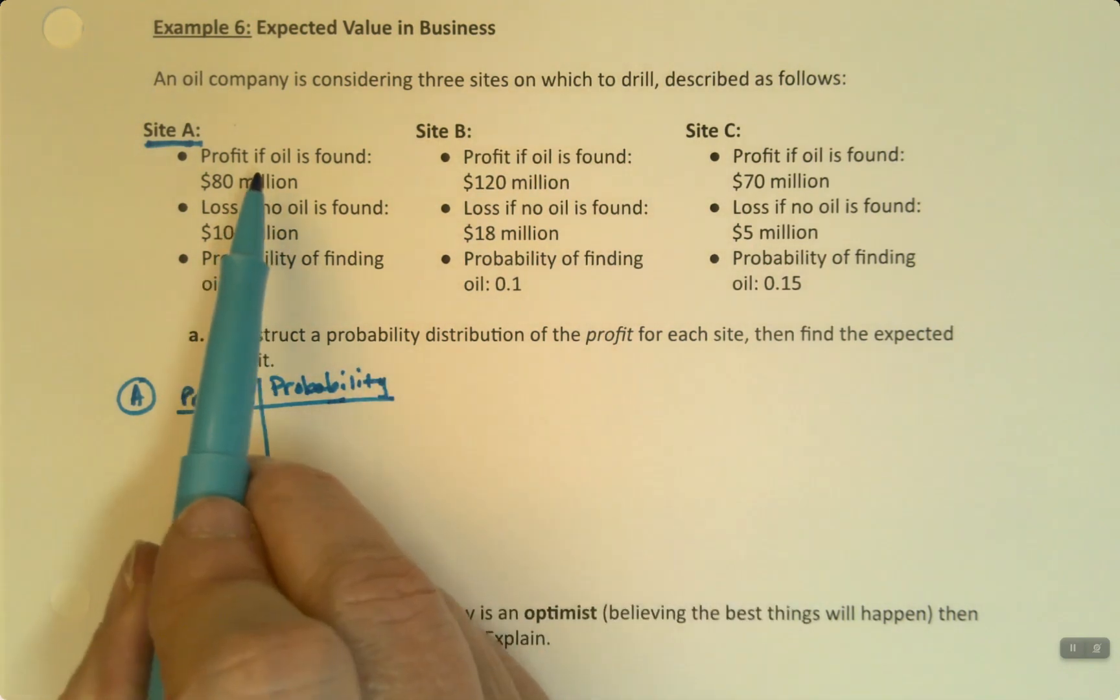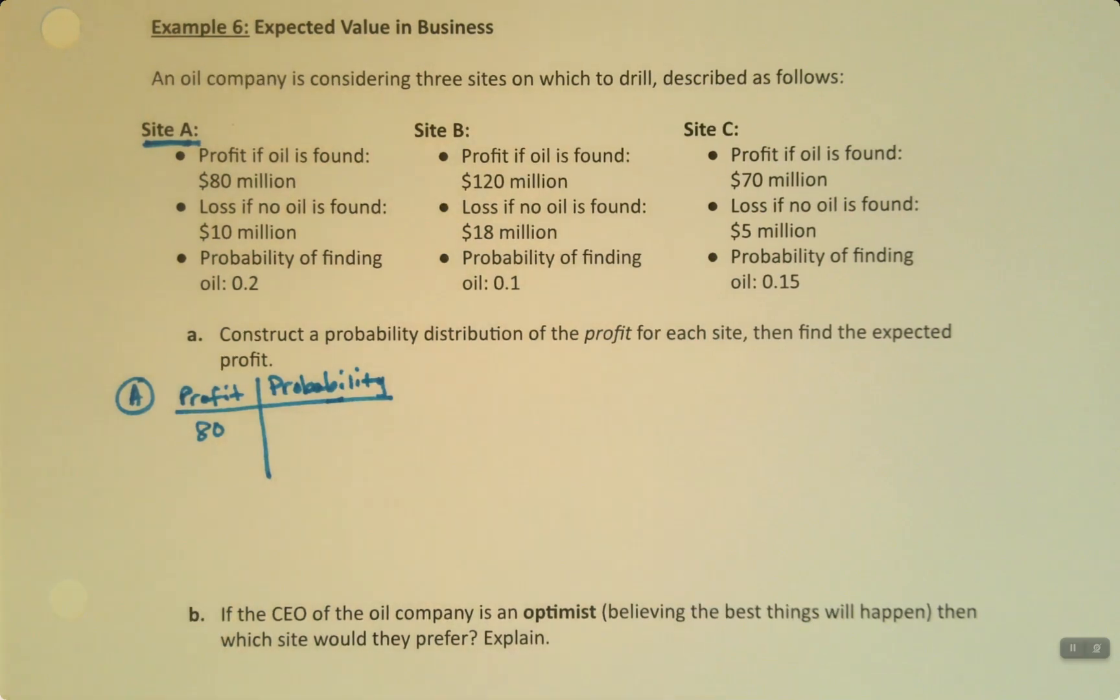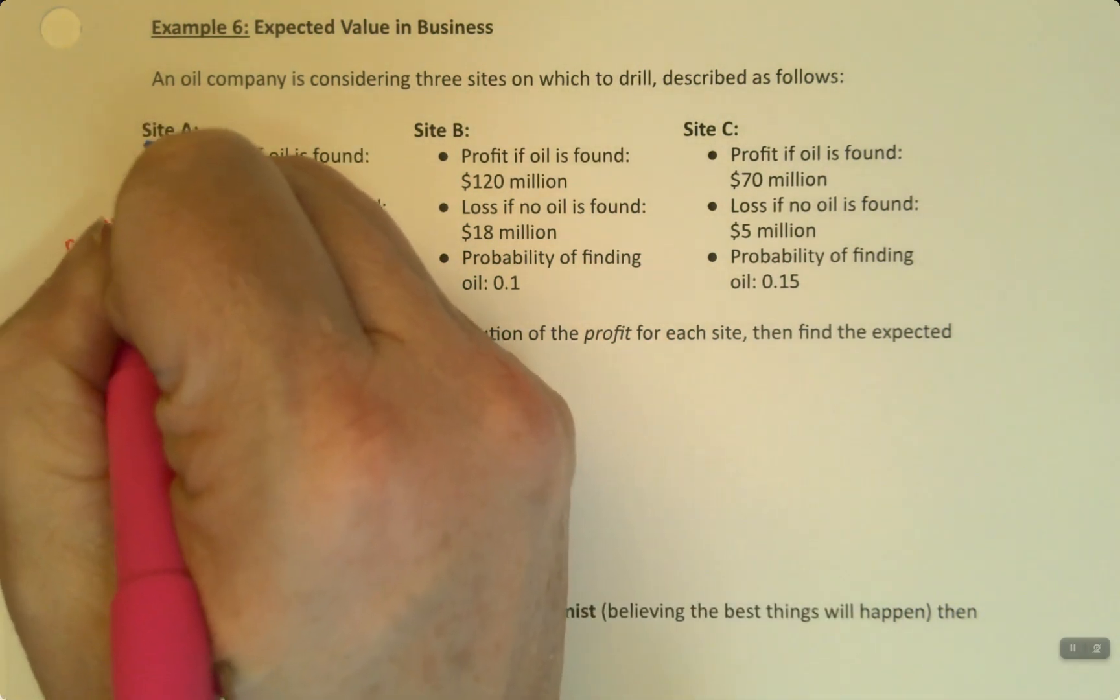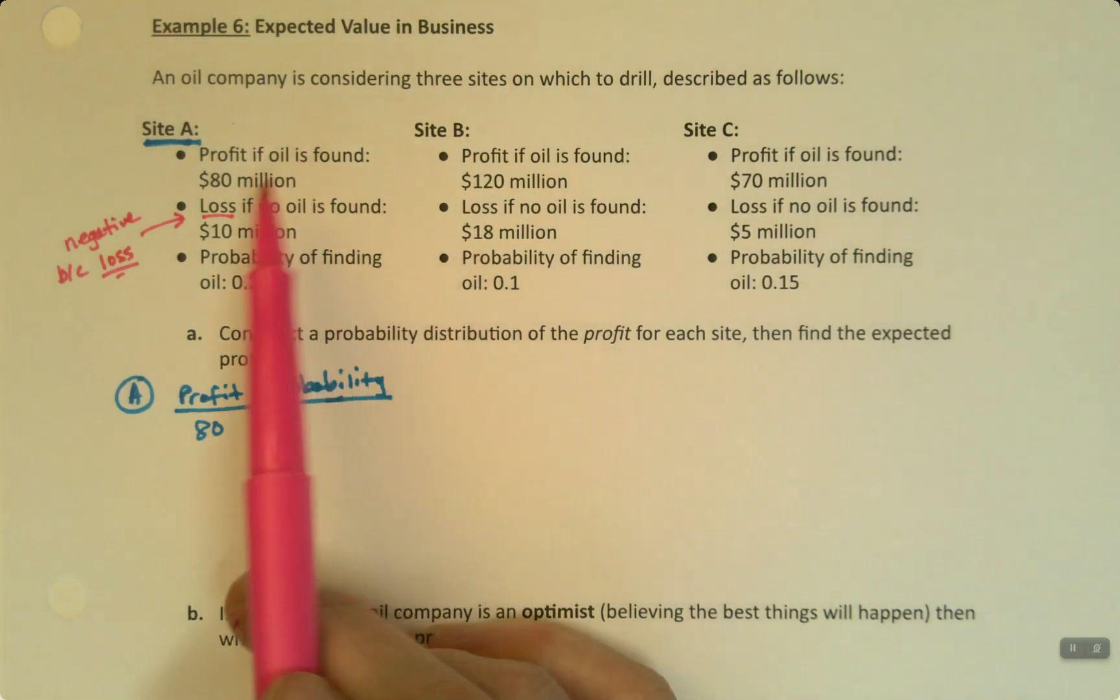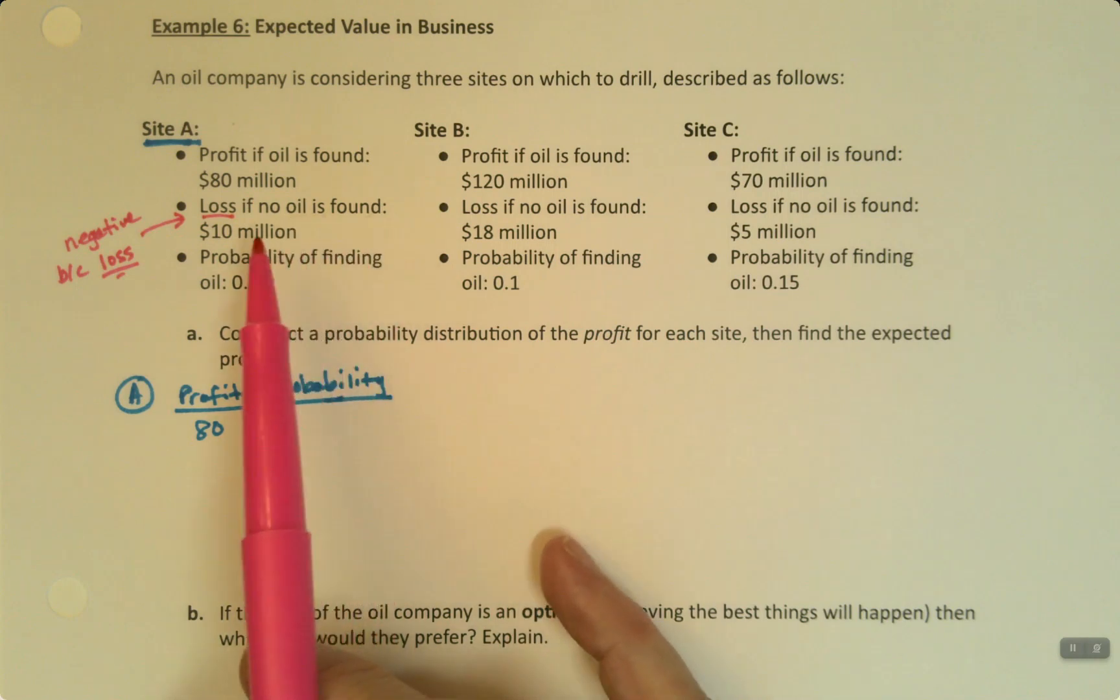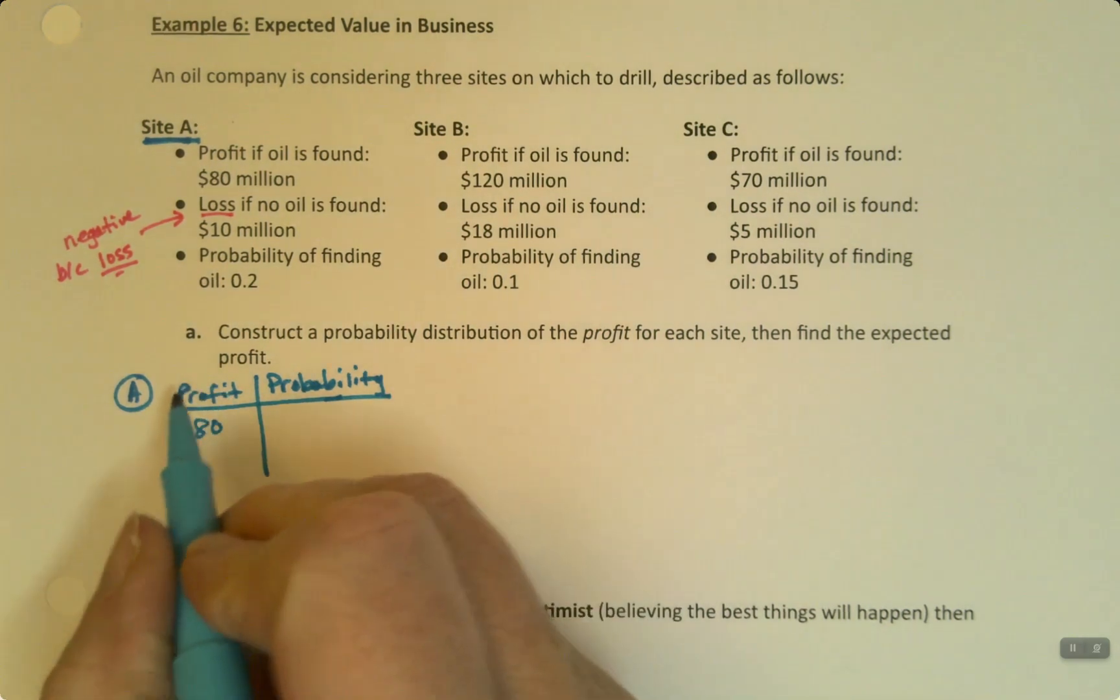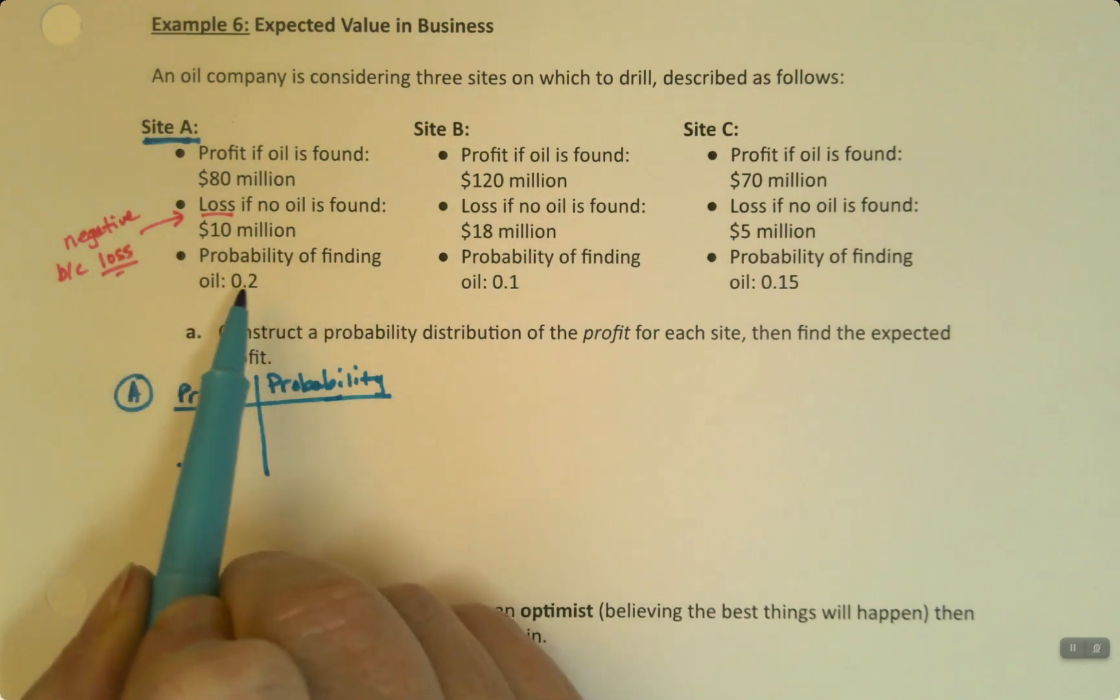If we find oil, if this company finds oil, they're going to make 80 million. You can just type 80, we worry about the million dollar at the end. Now, loss. Look very carefully. This is a loss, right? So this is negative because it's a loss. Now, be careful with these problems. Sometimes the loss is negative, which it is in this case. And sometimes it just means it's diminished. You just don't make as much. So it would say profit if oil is found is 80 million. Profit if no oil is found would be 15 million. It'll be positive 15. So it'll be a lower number, which doesn't make any sense in this context, because if you don't have any oil, you're not going to get any money. So I didn't make it work here. So this is a negative 10. It's a loss in this case. Now, the probability of finding oil is 0.2, right here.